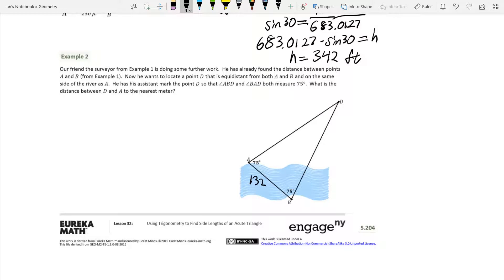Now we just need to find that other angle, which is pretty simple. 75 plus 75 is 150. 180 minus 150 gets us 30. Now we're trying to find the distance from D to A to the nearest meter, so we're going to call this Z.